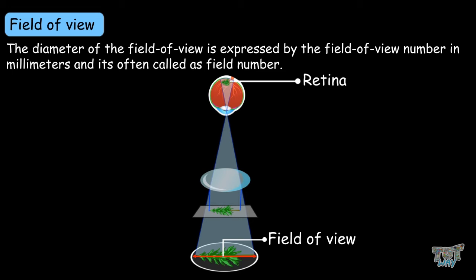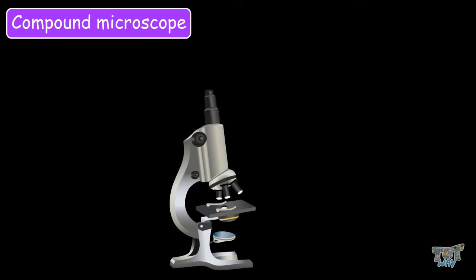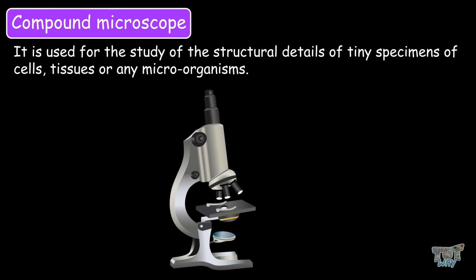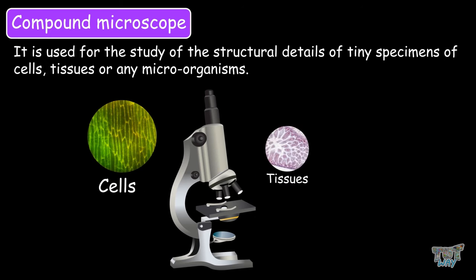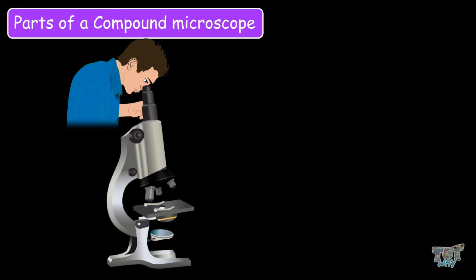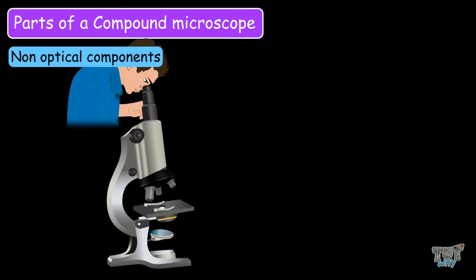Now we know what magnification and field of view are. Now we will be learning more about the compound microscope. The compound microscope is an important scientific instrument of any science lab. It is used for the study of the structural details of tiny specimens of cells, tissues, or any microorganisms. Now we will learn the parts of the compound microscope, starting with the non-optical components.